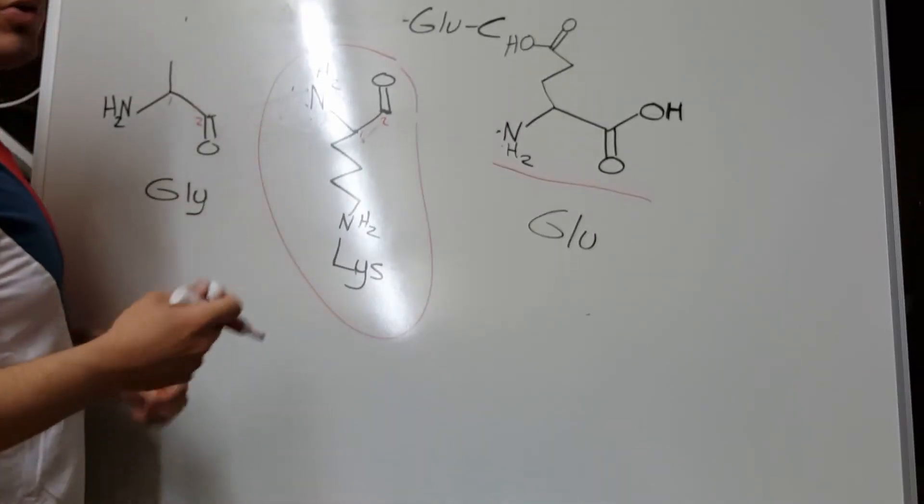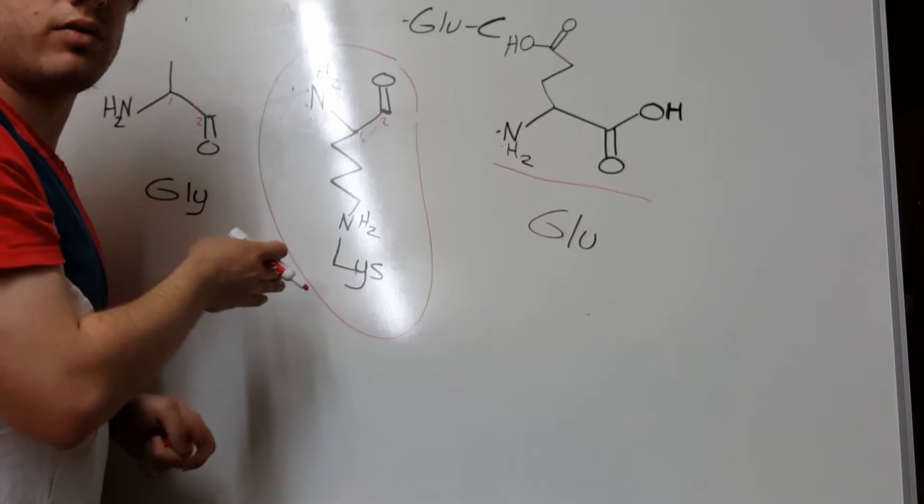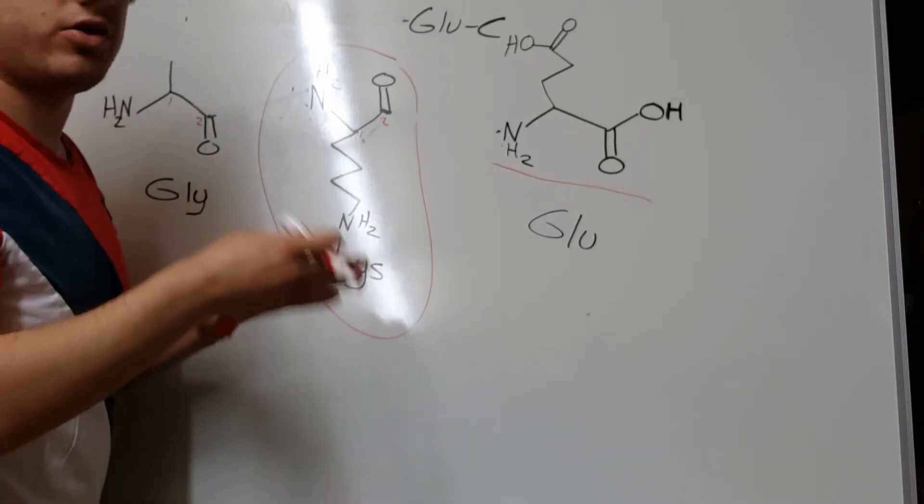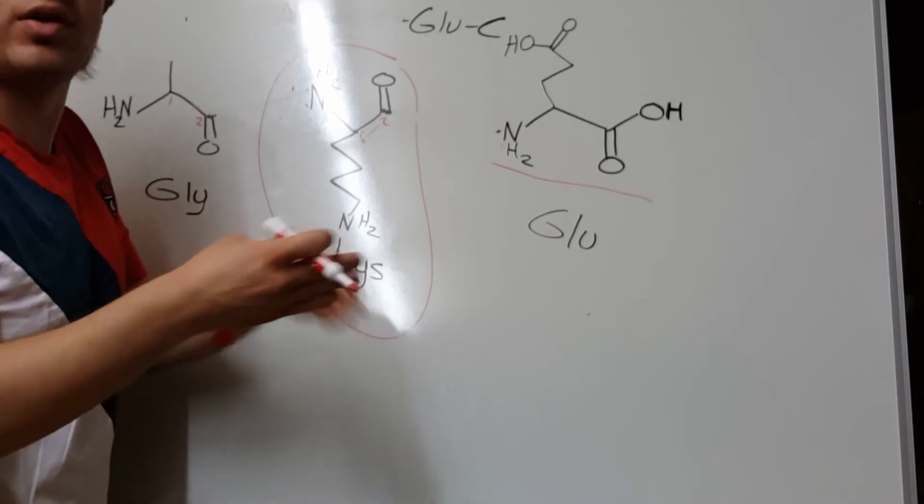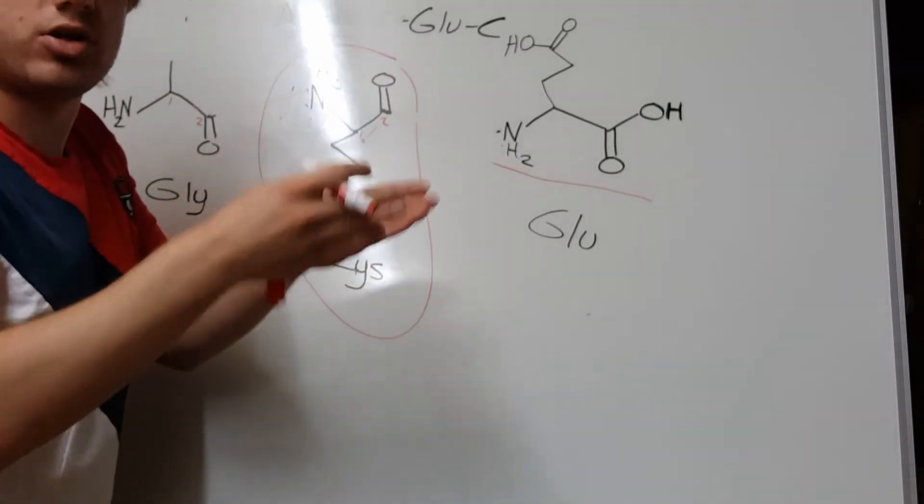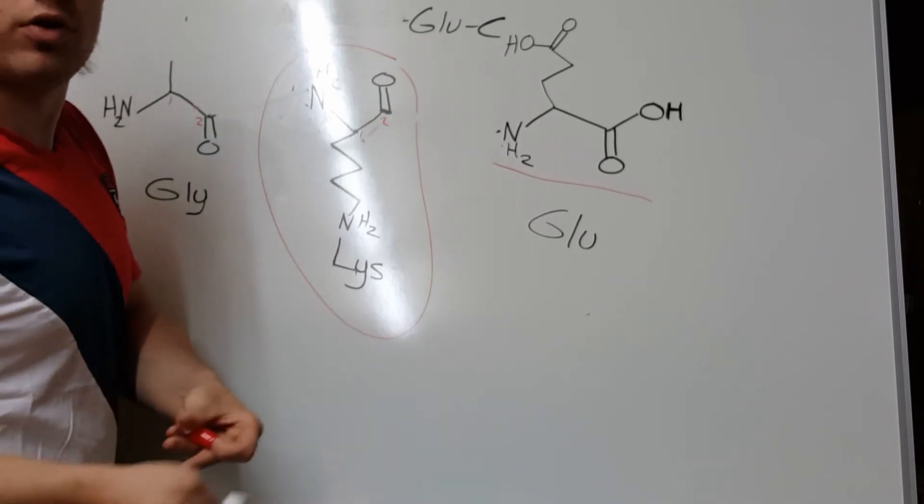So, again, if it's a multiple choice question and they just write out the name, then just chop off the leftmost amino acid as many times as they tell you to do an Edman degradation. So, if there are two sequential Edman degradations, you chop off two N-terminus amino acids. And then you just pick the answer that has what's ever left over.